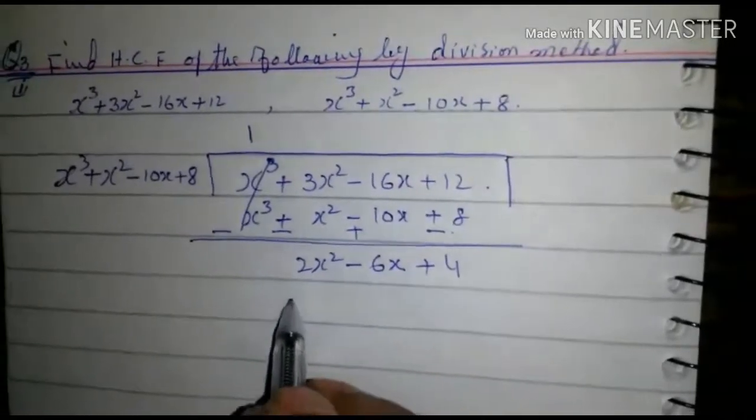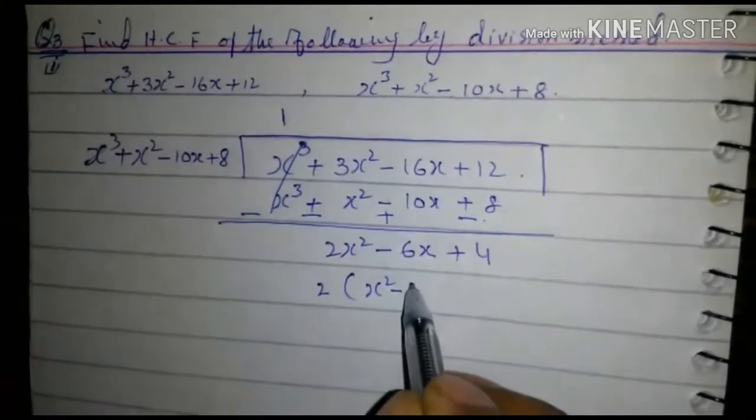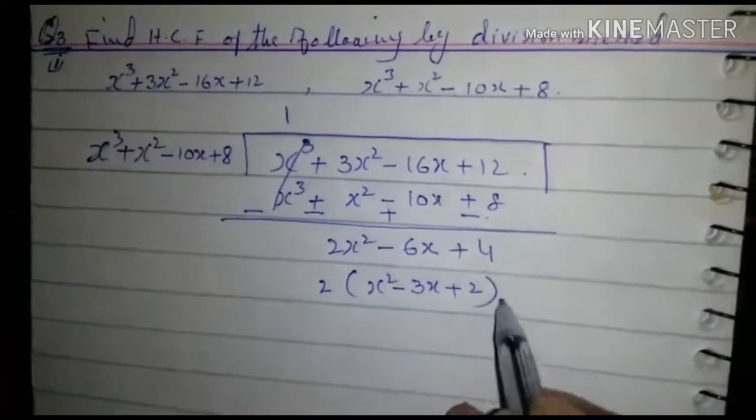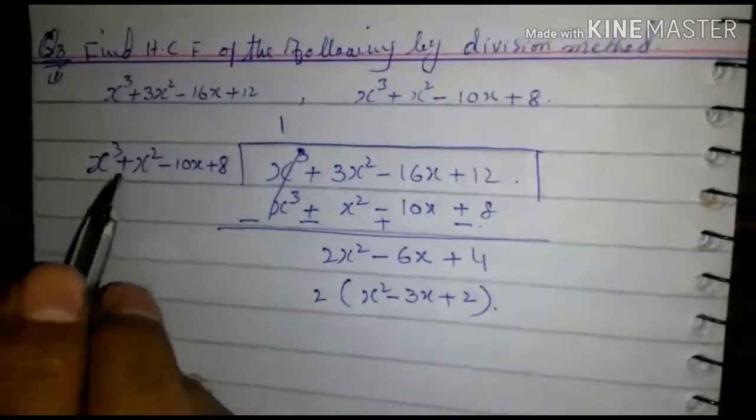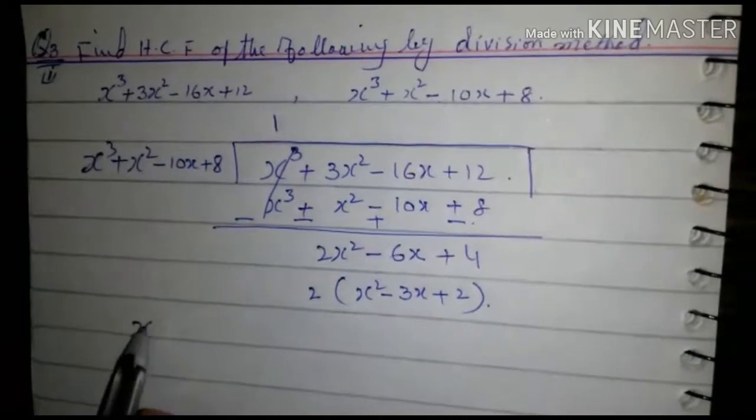2 is common in this expression: x² - 3x + 2. Now divide the second expression with this x² - 3x + 2.